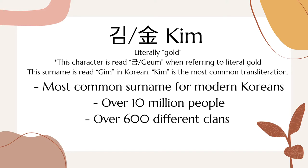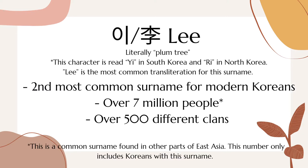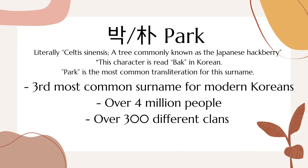There are over 10 million Koreans surnamed Kim, with estimates of about 600 different clans. Every single one of these clans would be considered separate from each other, and thus unrelated. There are over 7 million Koreans surnamed Lee, with around 500 different clans. With Parks, there are over 4 million people with around 300 clans.